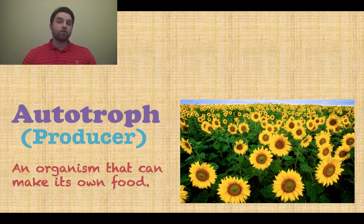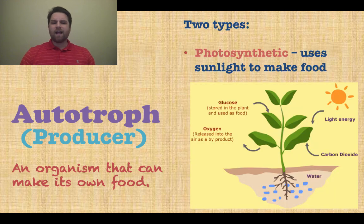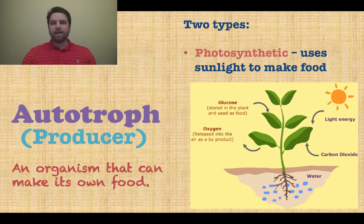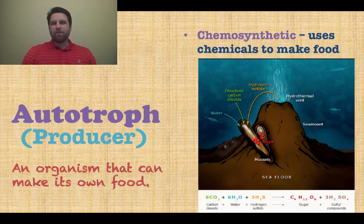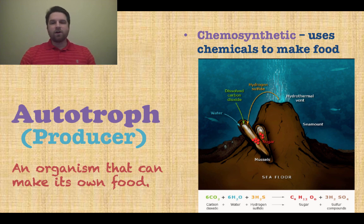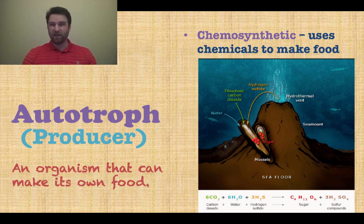First you have your autotrophs, which are your producers — the organisms that make their own food. There are two main types. The first is photosynthetic: these use sunlight to make food, like plants. The second is chemosynthetic — chemo meaning chemicals — so these autotrophs use chemicals to make their own food. They usually live around hydrothermal vents at the bottom of the ocean where there's no sunlight.